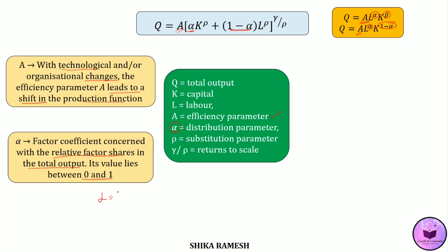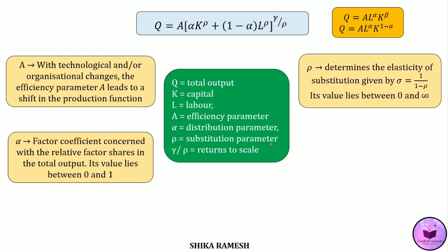Its value lies between 0 and 1. Suppose the value of alpha is equal to 0.6, then 1 minus alpha will be 0.4. It means that the share of capital in the total output is 60% whereas the share of labor is 40%. Then we have a new parameter — the substitution parameter represented as rho in the CES Production Function, which is not present in the Cobb-Douglas Production Function. The substitution parameter determines the elasticity of substitution, calculated as σ = 1/(1−ρ).